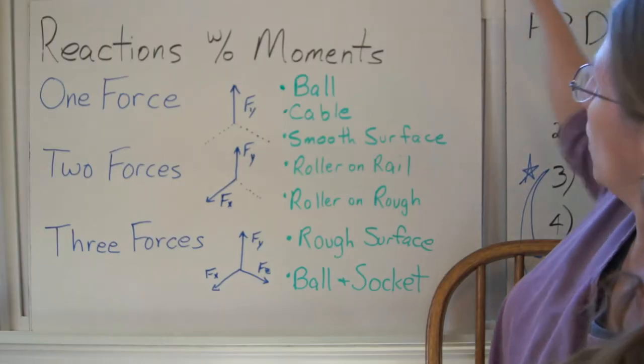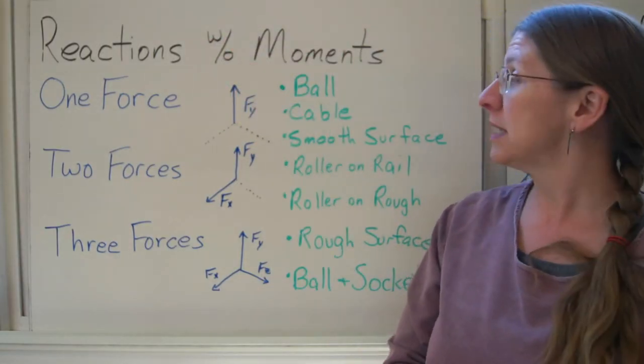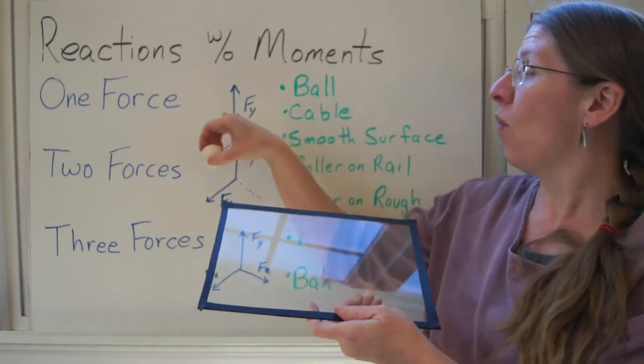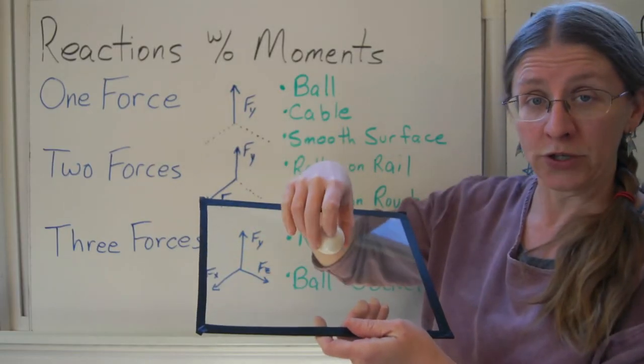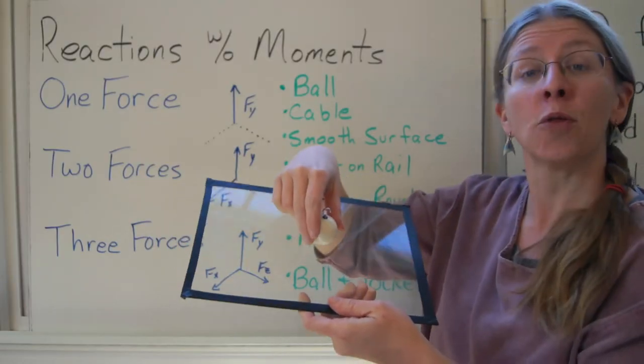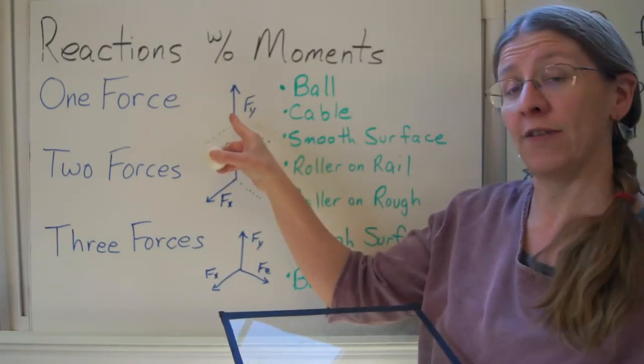We're going to start with the reactions that you get with no moments at all. So for example, if I had a ball on this surface, I only have one force as a reaction. It's just a normal. The ball can move in any direction it wants except through the surface. So I have one force along a known line of action.